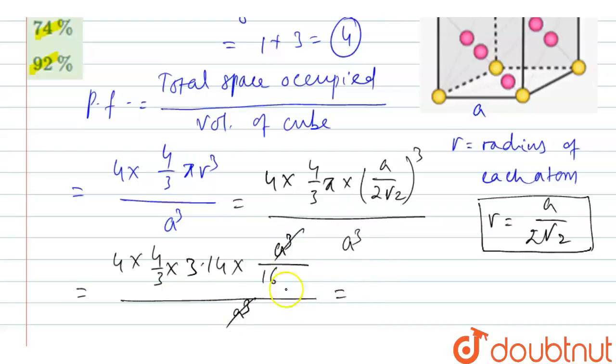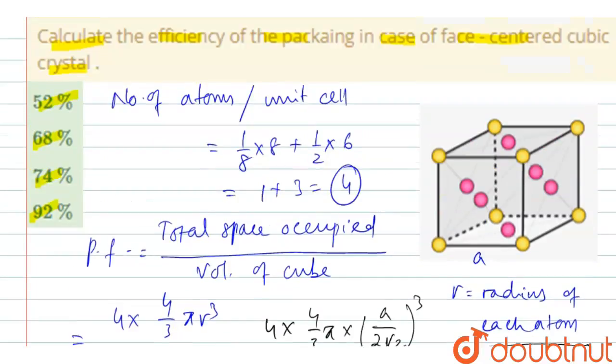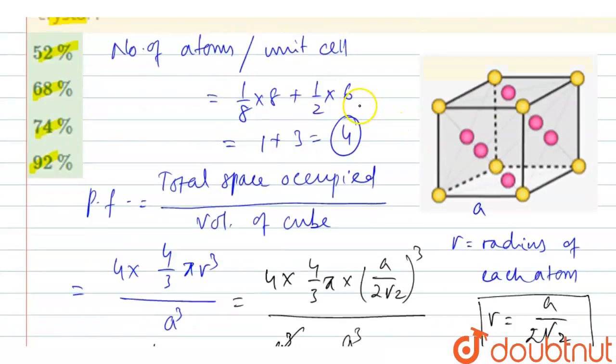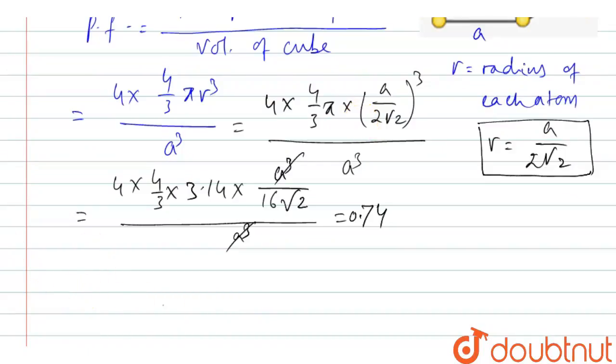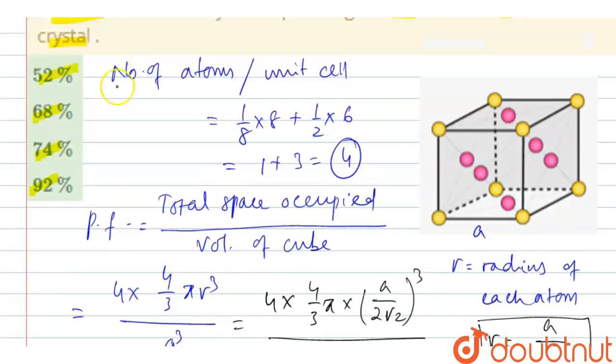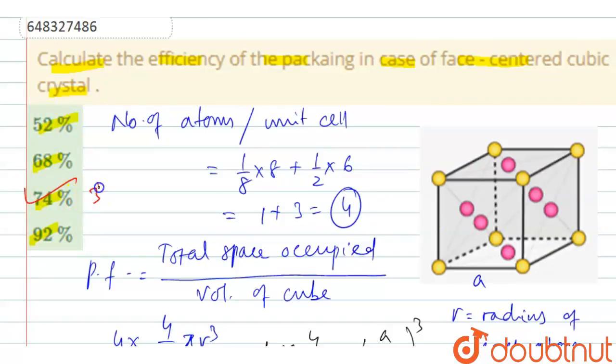which on simplification gives 0.74. So packing fraction for FCC is 0.74. Therefore, percentage of occupied space is equal to 0.74 times 100 equals 74. Therefore, answer is 74%. That means option 3 is the correct option.